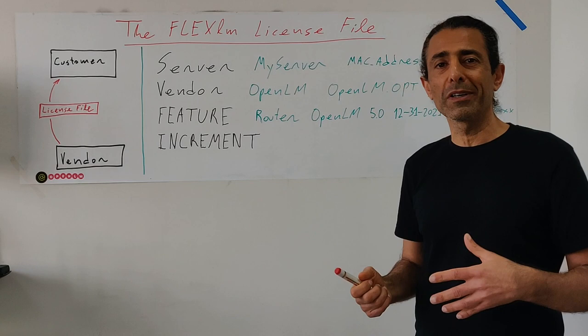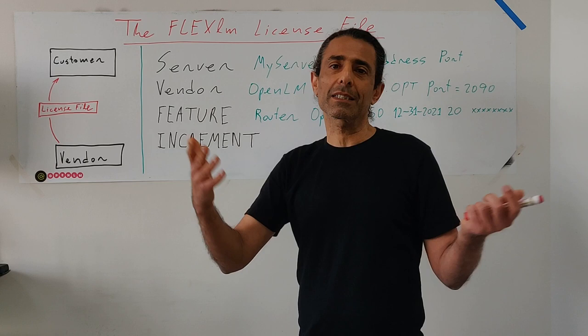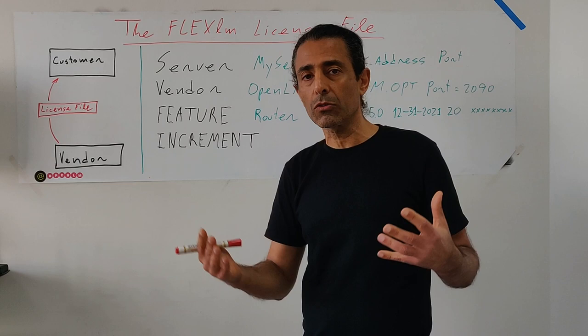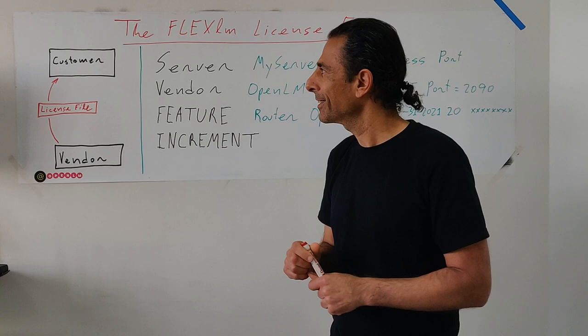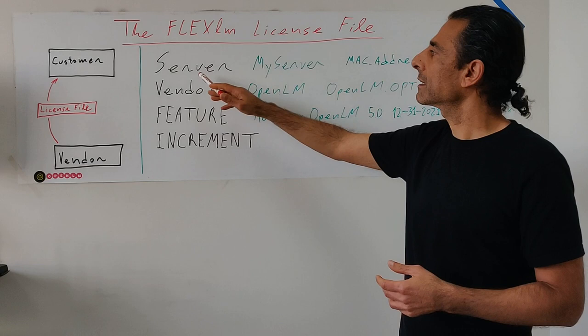Today we are going to review the structure and what's inside the license file. The license file is a simple mechanism — a text file — but very smart and with a lot of capabilities. We are just going to look at the tip of the iceberg. Let's start with the content of the file. The first line we are going to see is the server line.